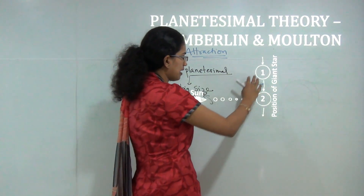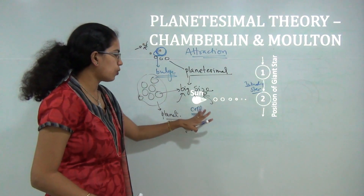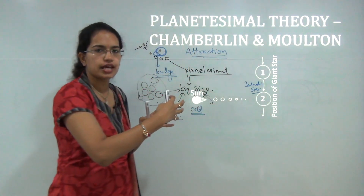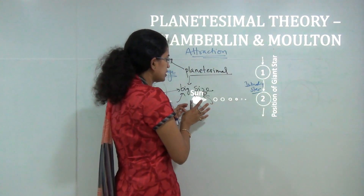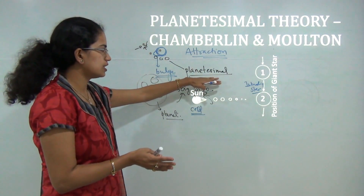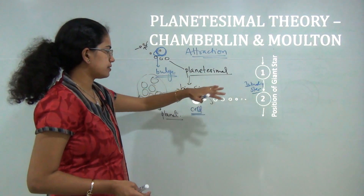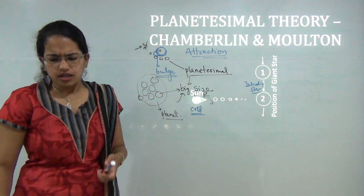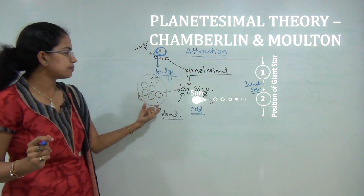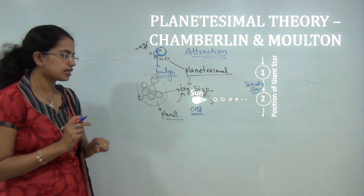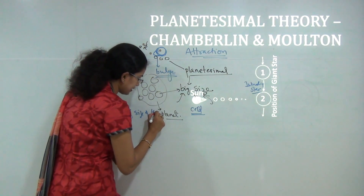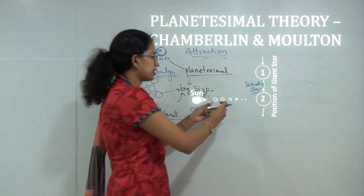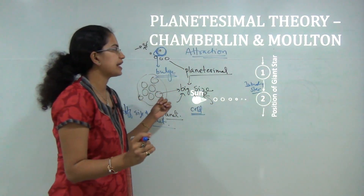In this theory, the intruding star moves around the cold protosun; due to the attraction pull of the intruding star, the protosun bulges out. Mass is ejected as planetesimals, and over time these planetesimals aggregate and accrete together to form a large mass known as a planet. The major criticism was that it could not explain the different sizes of the planets. A second major criticism was that the huge distance between the planet and the sun made it difficult to explain how such a strong attraction force could exist.